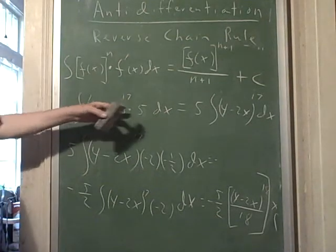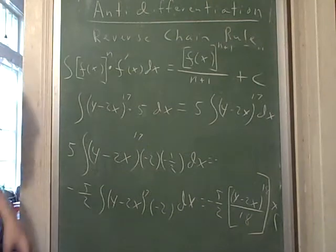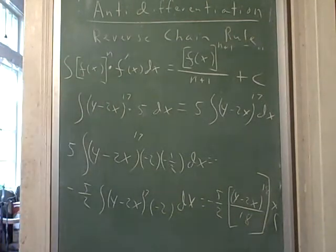So if you have one with the wrong f prime, just bring it outside, and you do it exactly the same way.